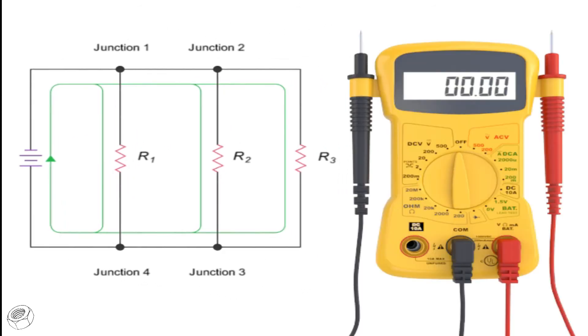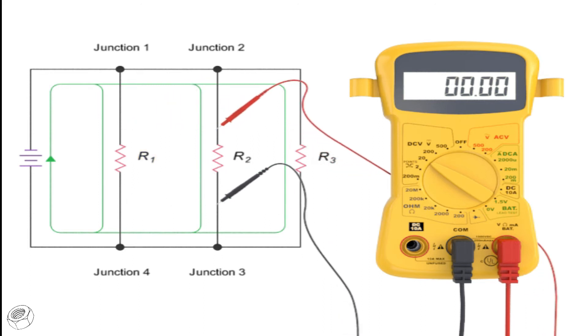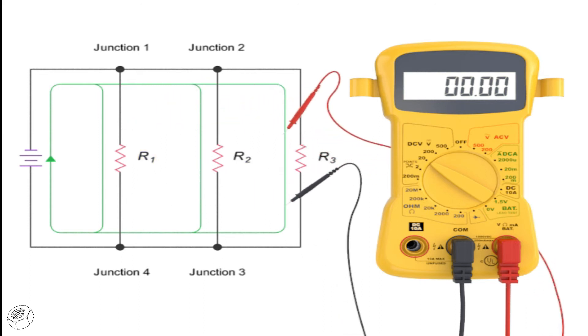An important difference between a series and a parallel circuit is that the voltage in the parallel circuit is the same across all branches.